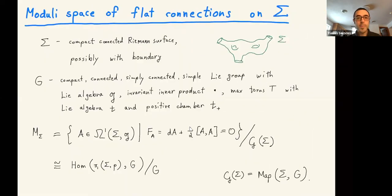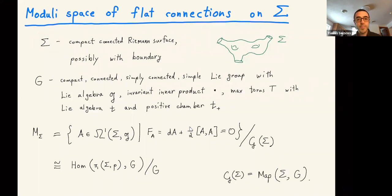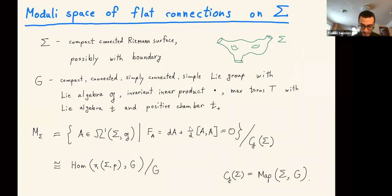I'll talk about how you can extract something more concrete, like a numerical invariant from those K-theory classes. You can use this to distinguish K-theory classes, and I'll also show how to calculate it explicitly in the simplest case, namely a disk. At the end, depending on time, I'll tell you a little about how to calculate it in general for a general surface, which will involve something called non-abelian localization.